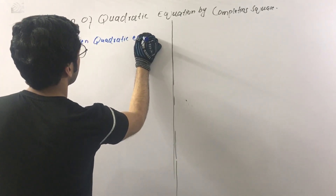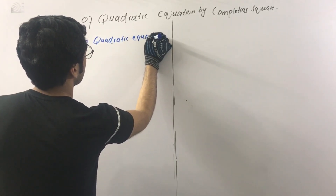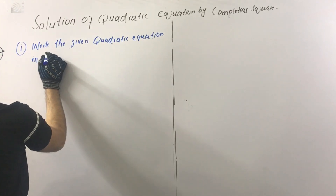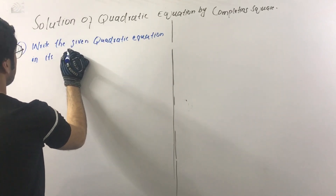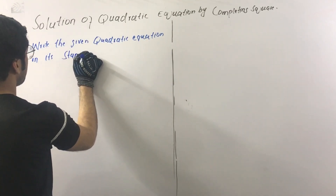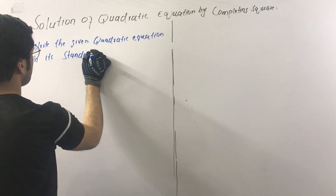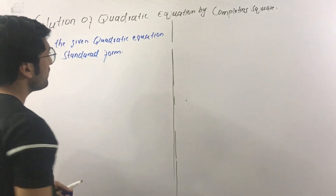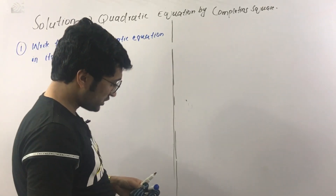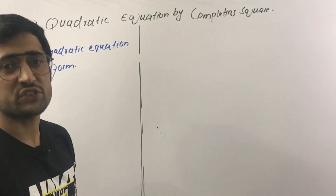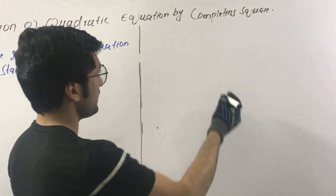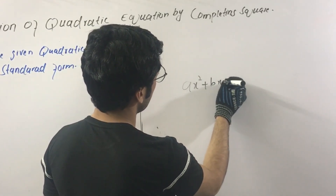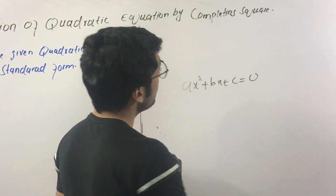Quadratic Equation. The quadratic equation has a standard form. The standard form is: ax squared plus bx plus c equal to zero. So the right side of the equation must equal zero.